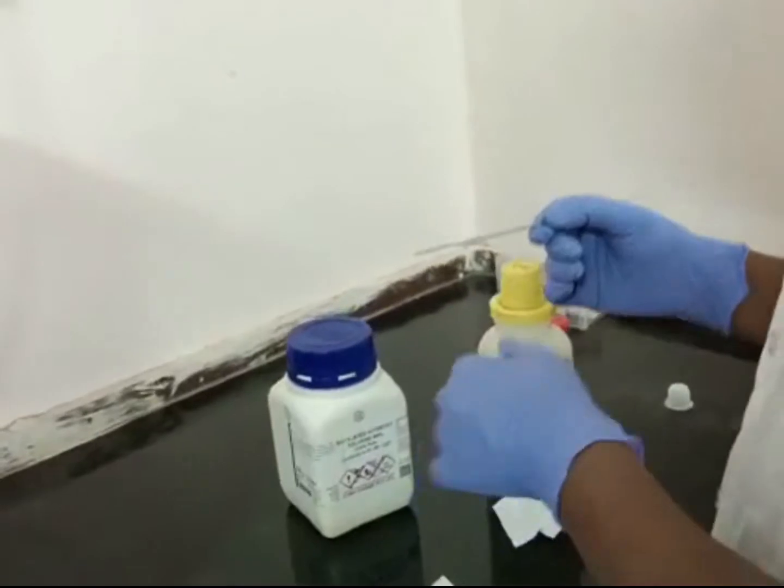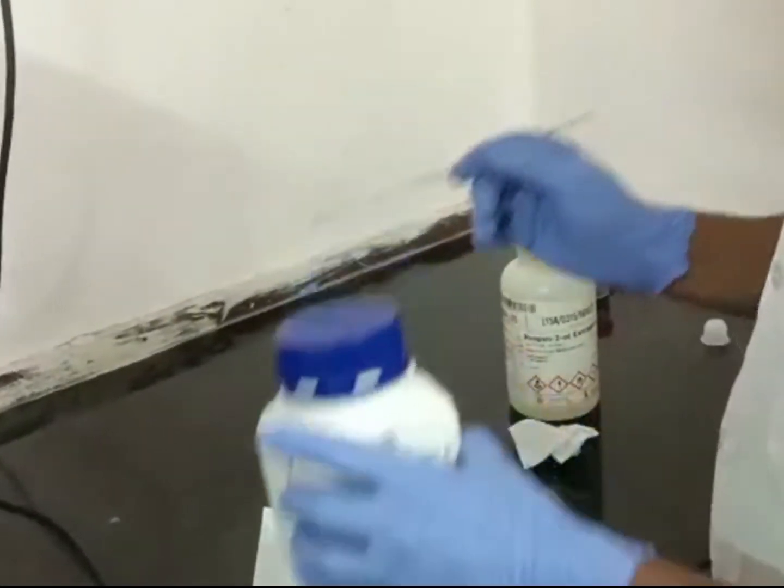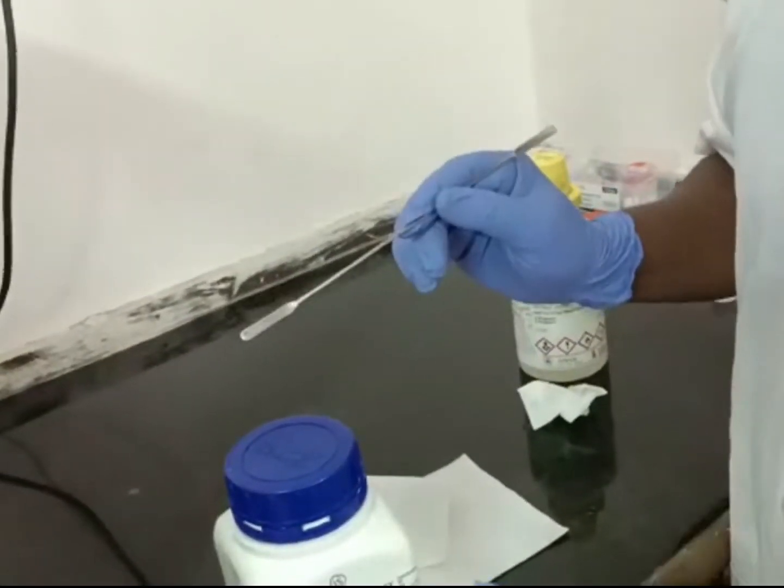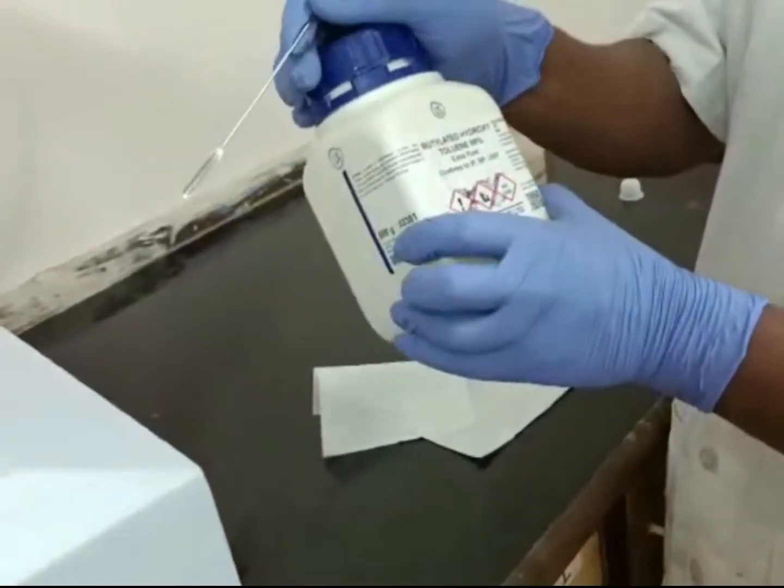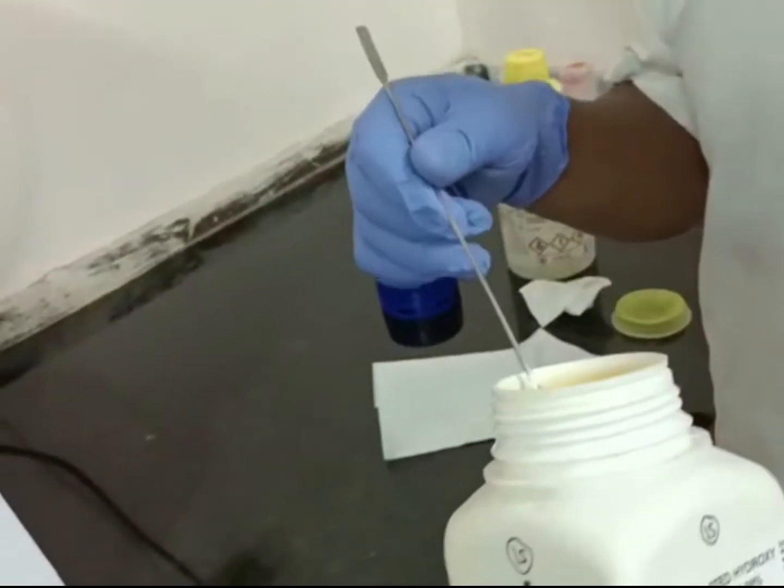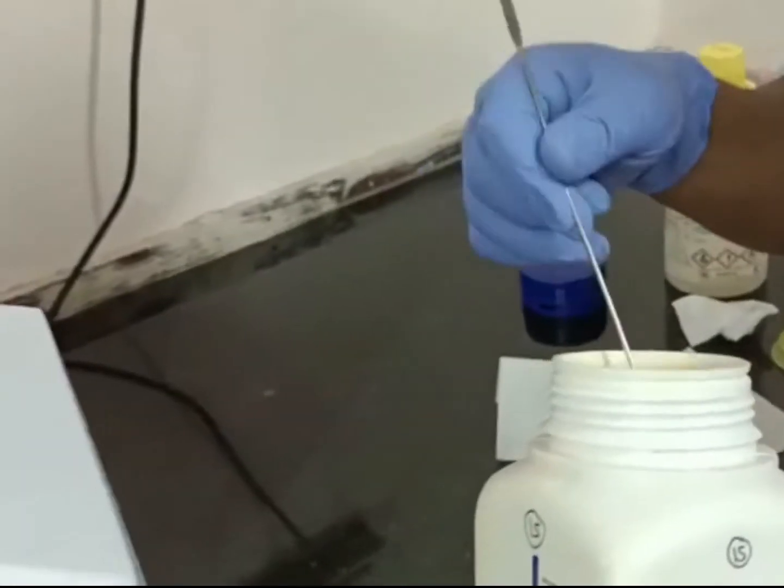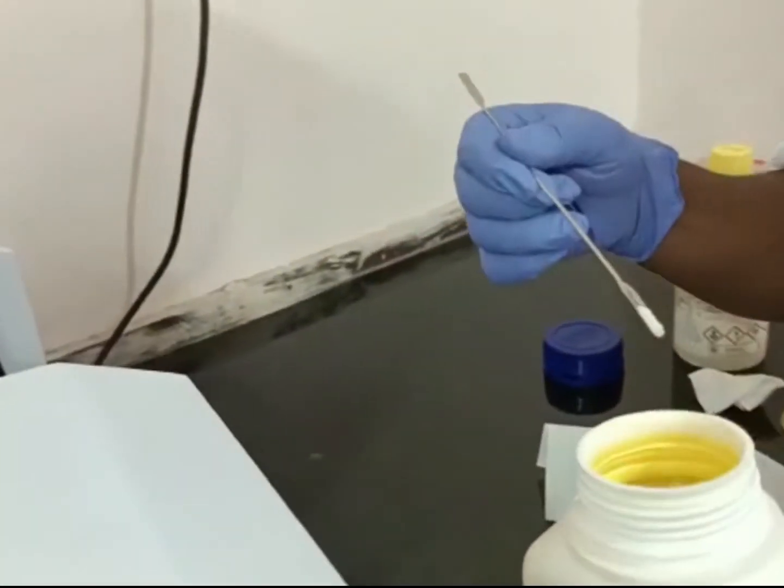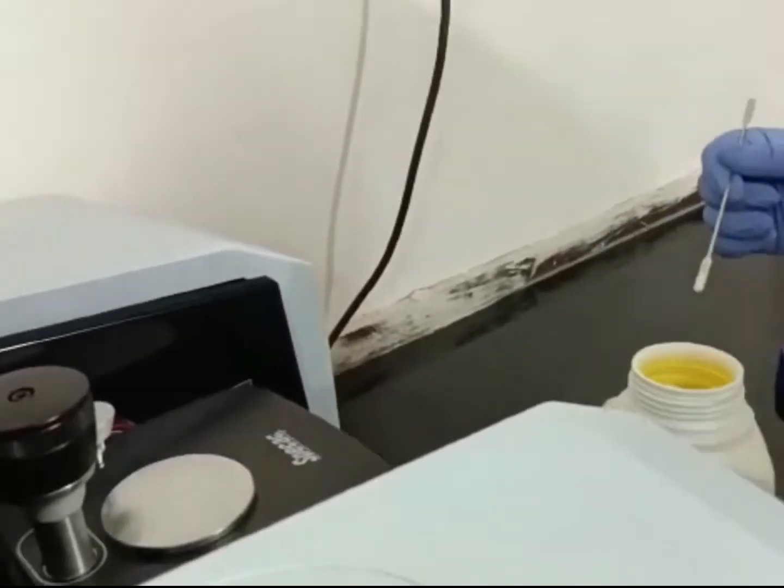Now we are taking butylated hydroxy toluene for the demonstration of this instrument. Place the sample on the surface of the diamond area.